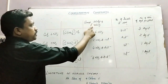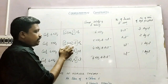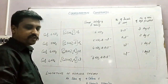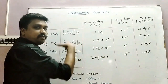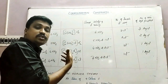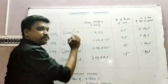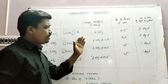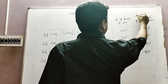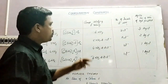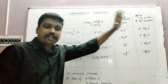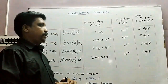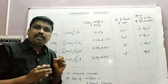To summarize: in the first compound, six ammonia molecules satisfy the secondary valency, with three chloride ions outside. In the second, five ammonia and one chloride ion are inside, with two outside. In the third and fourth, four ammonia and two chloride ions are inside, with one chloride outside. When treated with silver nitrate, we get precipitates of silver chloride equal to the number of ionizable chloride ions: three moles, two moles, and one mole respectively. These are the main concepts of Werner's theory of coordination compounds.